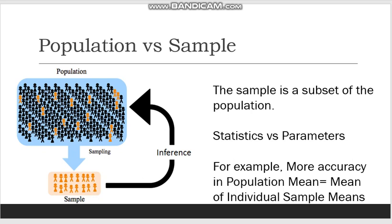The properties of the population are known as parameters, whereas the properties of a sample are known as statistics. We have already talked about how statistics can refer to numerical data, the methods of calculating that data, and the summarization of data. To say that the properties of a sample are called statistics means we are talking about the summarization of data. In an ideal case, the statistics of the sample would match the parameters of the population — the sample would perfectly reflect the properties of the population. This rarely happens because a lot of errors creep in here and there.